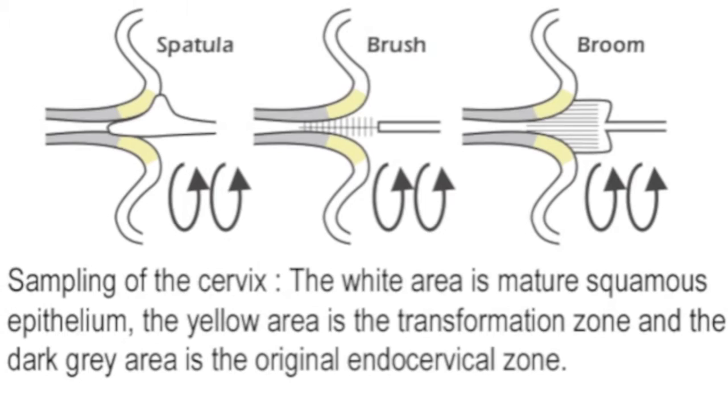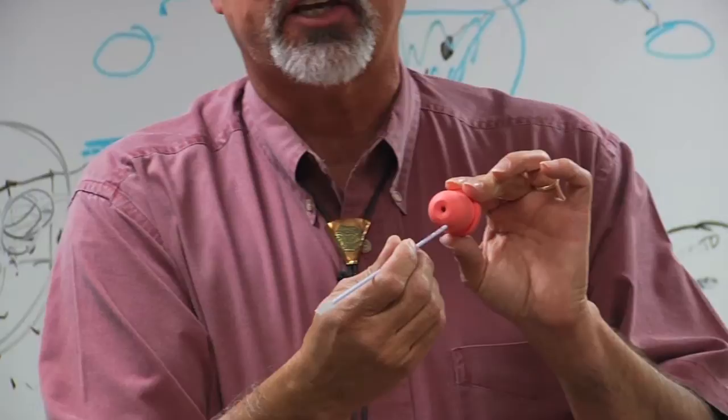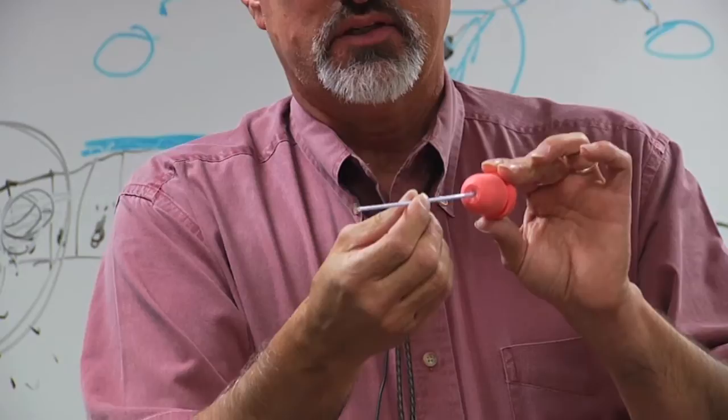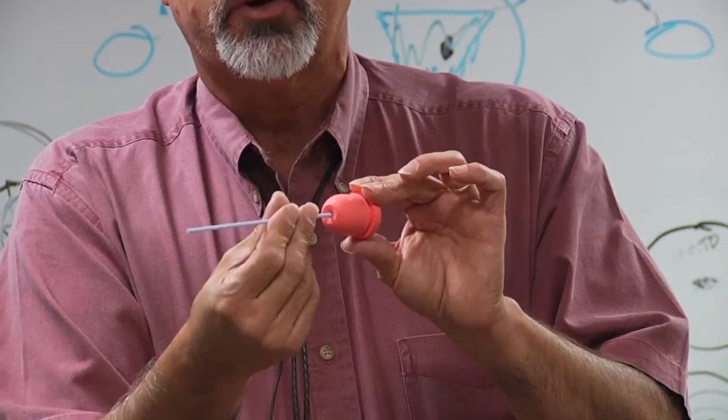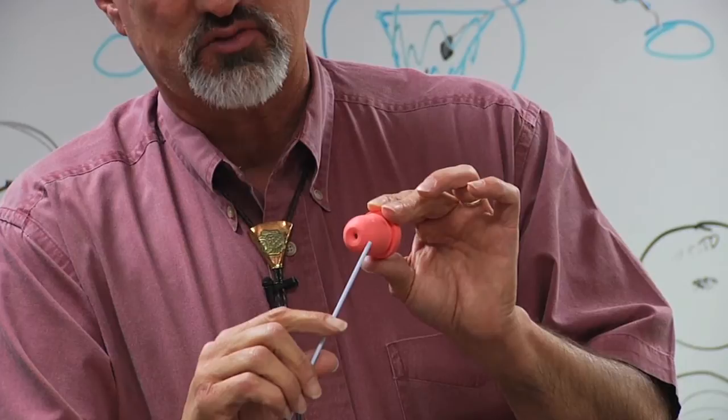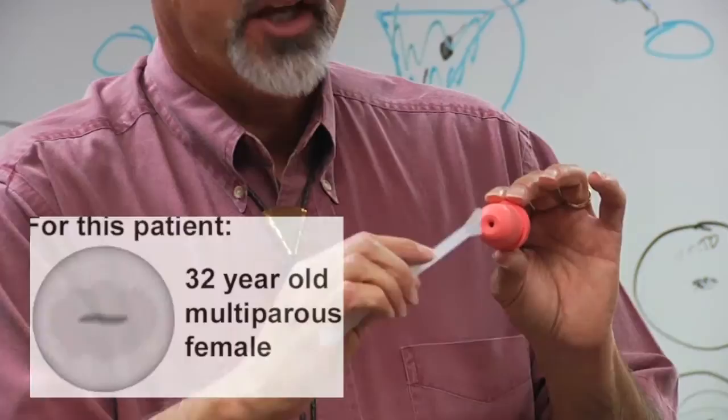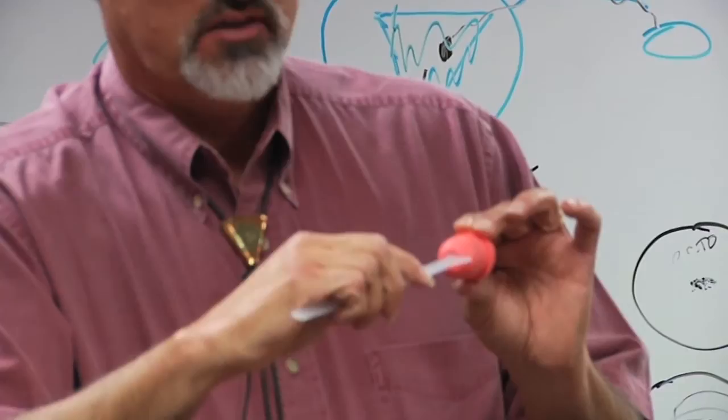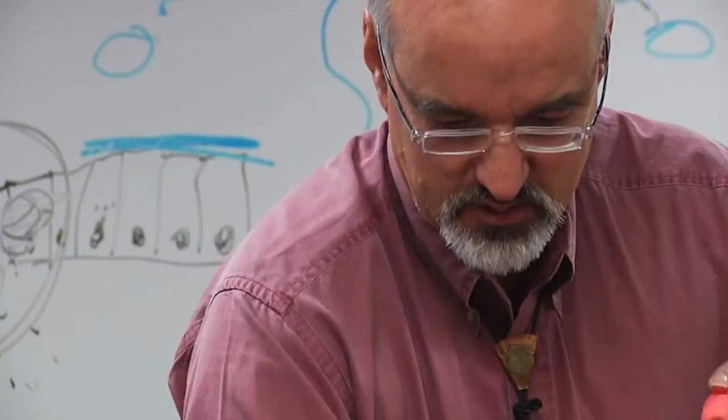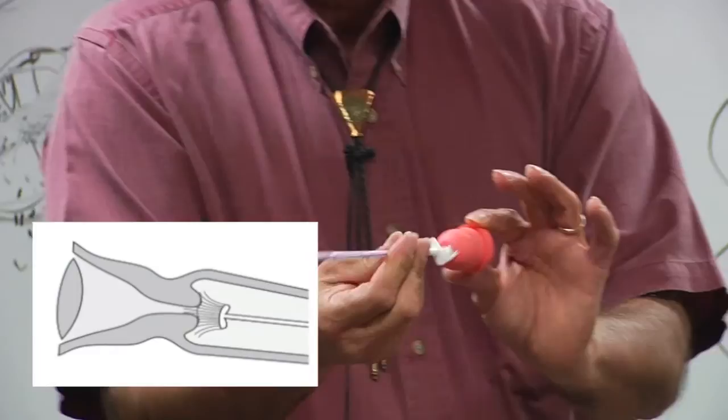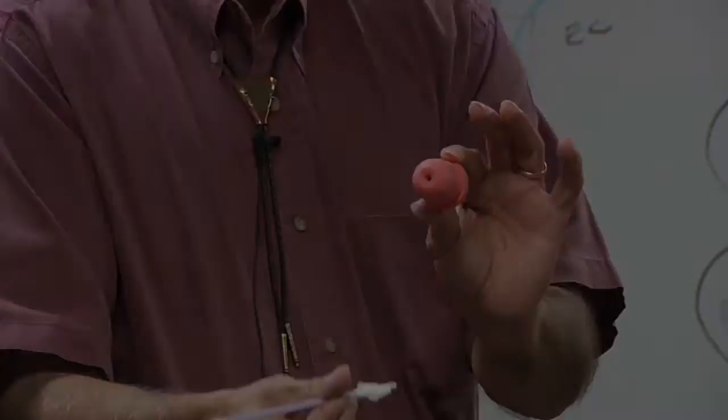Which instrument works best? So if the squamous columnar junction is out here and the sample is collected by deep insertion of an endocervical brush with twisting, with the thought that I'm sampling the squamous columnar junction, it's removed and they've missed the squamous columnar junction completely for a woman, a multiparous woman who has ectropion of 360 degrees. The best instrument is the old-fashioned Ayre spatula. The Ayre spatula, do you see, will sample the squamous columnar junction here. Or use of the mop, do you see how the mop too collects ectropion because it hits the spot.